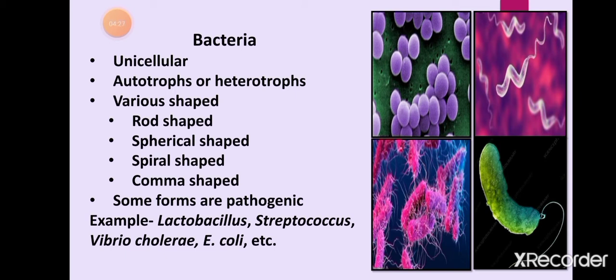Bacteria are of various shapes: rod-shaped bacteria are called bacillus, spherical-shaped are called cocci, spiral-shaped are called spirilla, and comma-shaped are called vibrio. Some forms are pathogenic and can cause diseases in human beings, plants, and other animals. Bacteria reproduce by the process of binary fission. Examples include Lactobacillus, Streptococcus, Vibrio cholerae (which causes cholera), and E. coli.